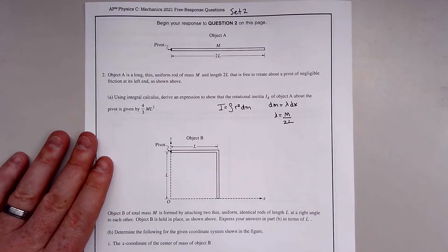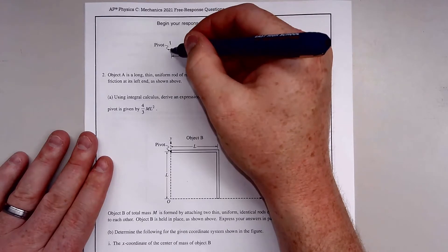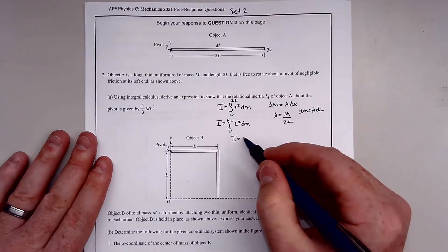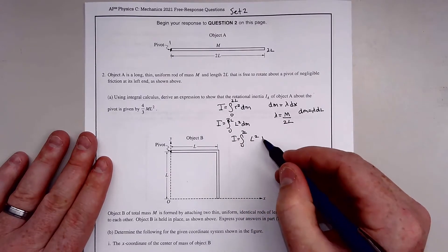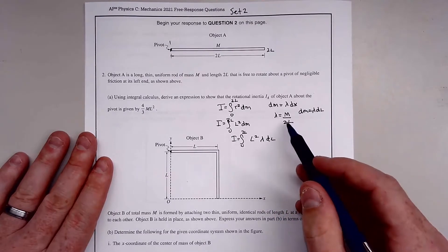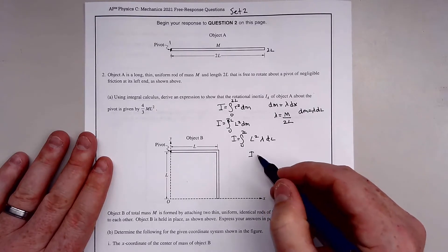Since our pivot point is here and the rod extends to 2L, we integrate from zero to 2L. We can rewrite this as the integral from 0 to 2L of L² dm, which gives us lambda dL. Lambda is a constant, so it comes out front. Integrating L² gives us L³ over 3.